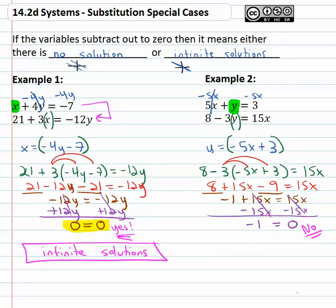And because this doesn't make sense, that means no value for the first equation will also work in the second equation. We have parallel lines. We have no solution because when the variable subtracted out, what we had left made no sense to us. Negative 1 and zero are not the same thing.